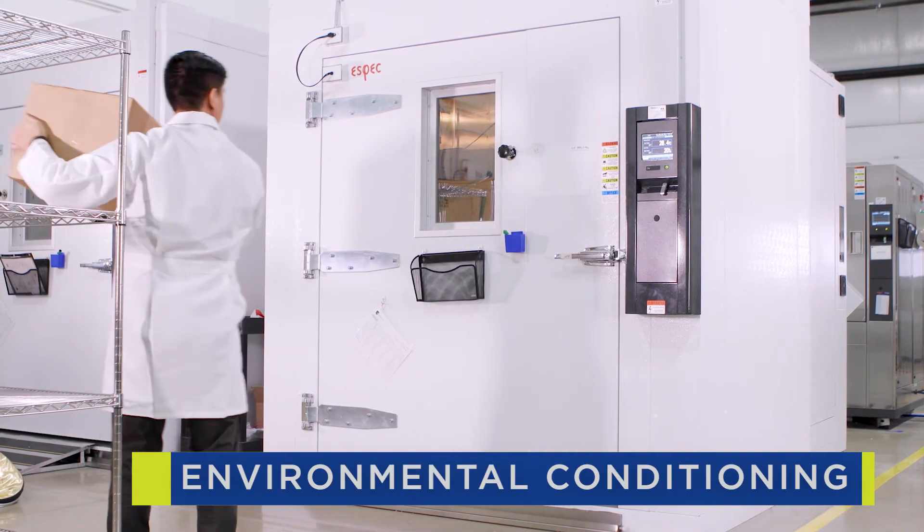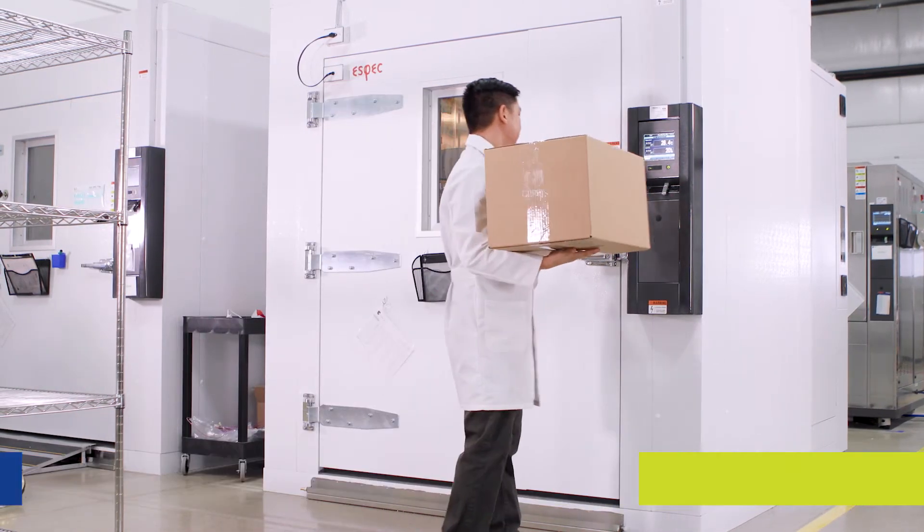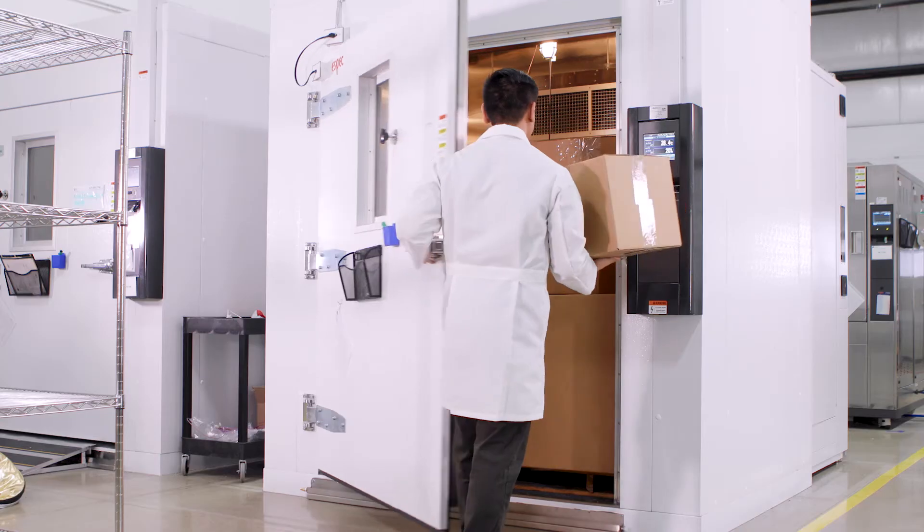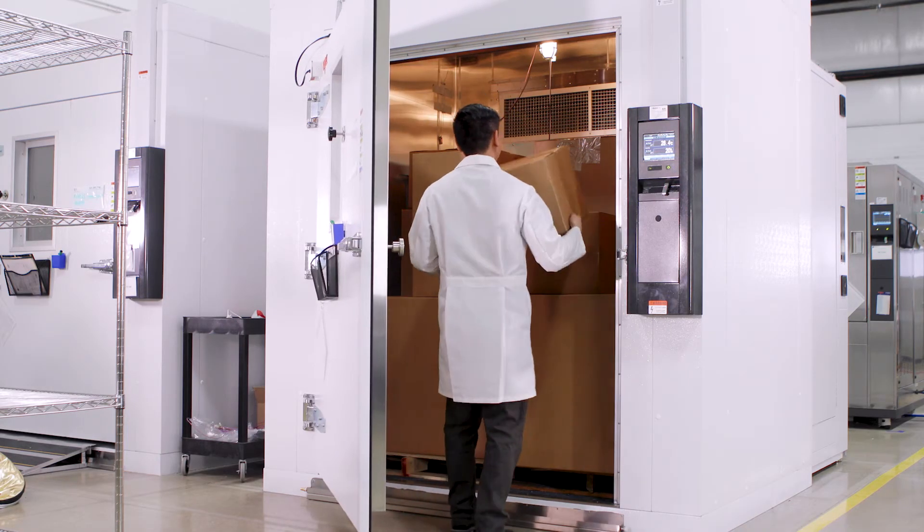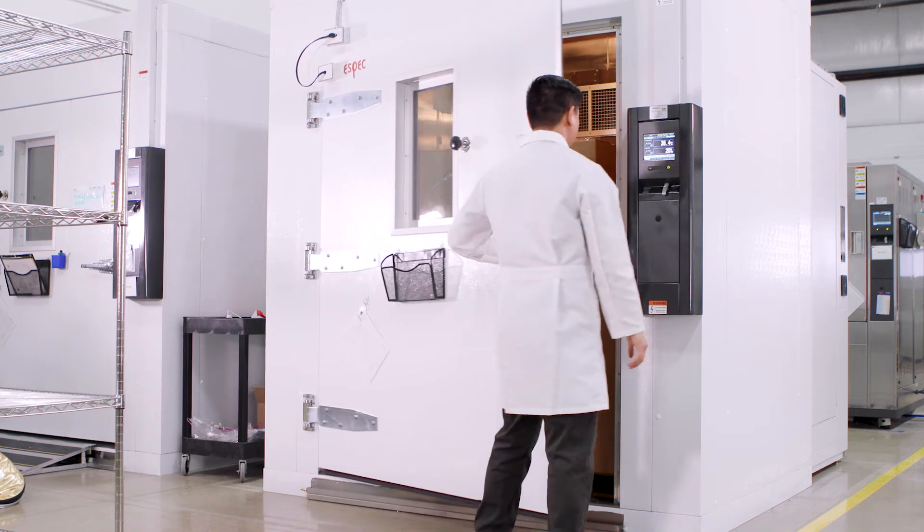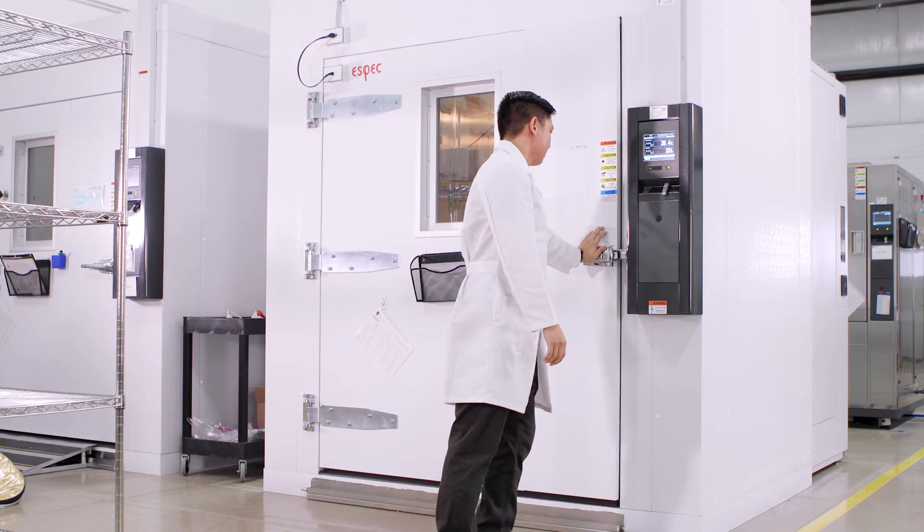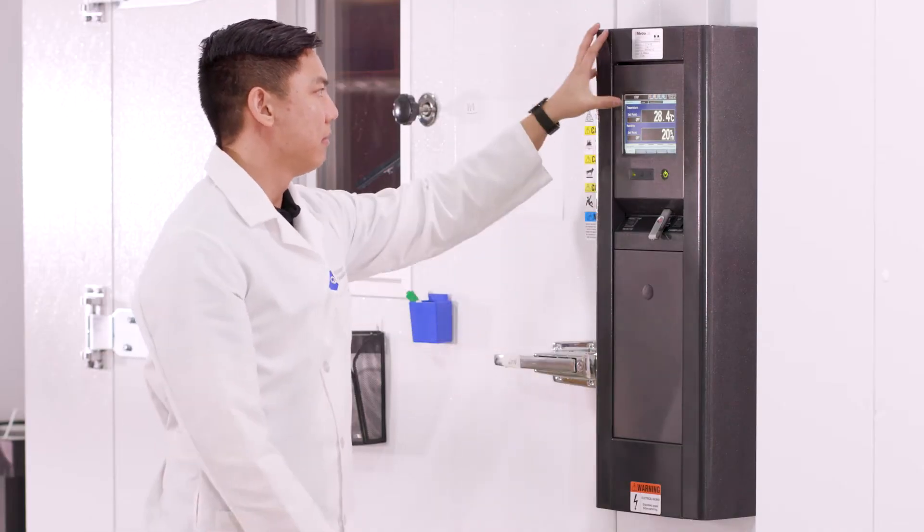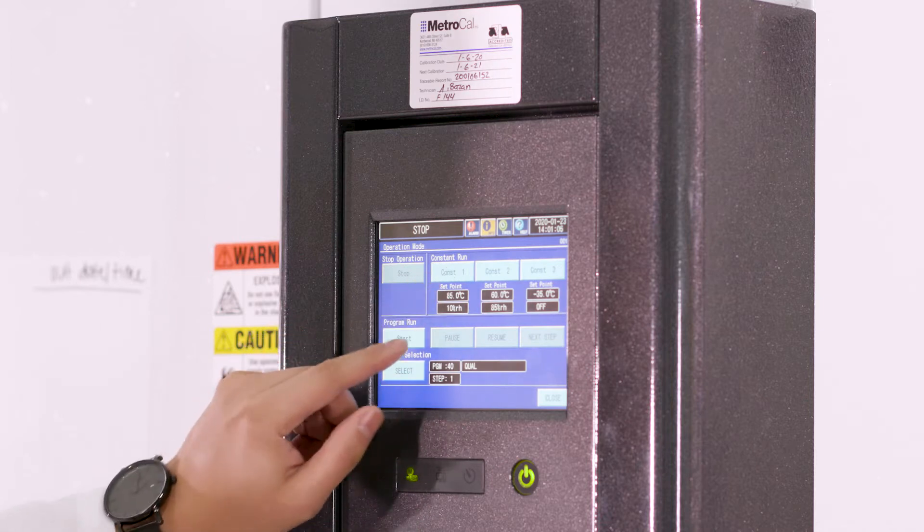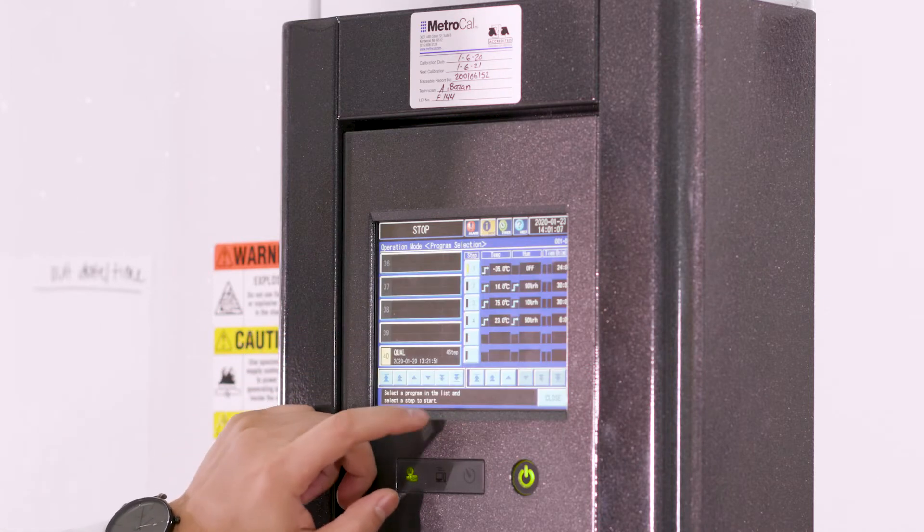Environmental conditioning is an important element to incorporate in your transit simulations per ISO 11607. Conducting this simulation provides objective evidence that your packaging can withstand the challenges of a worst case climate condition during transit. Most standards for environmental conditioning include sub-zero, tropical, and desert.